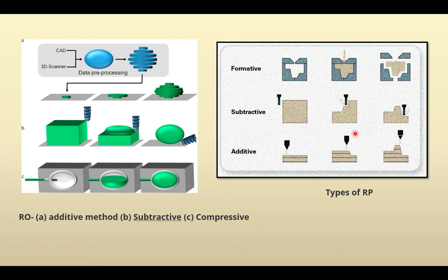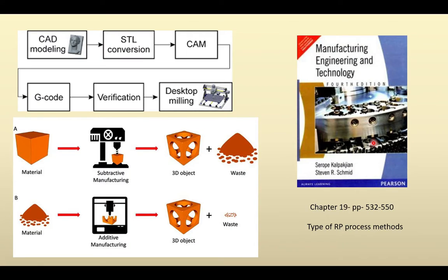For subtractive manufacturing, machining removes excess material to create the shape. For additive manufacturing, it is layer-by-layer: layers one, two, three, four, five are manufactured as given in the input — from computer drawings, STL files, or CAE files. Any CAD model is converted to an STL file, then sent to the computer for manufacturing. For a milling machine, G-code is generated. For subtractive manufacturing, you start with a large block of material and machine it down to the finished product.